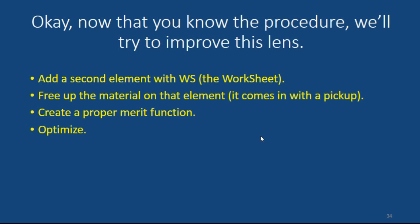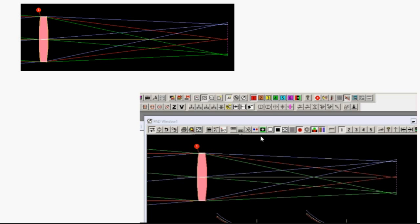Now you know the procedure, so let's try to improve this lens for real. We're going to add a second element with the worksheet. We're going to free up the material on that element, because it comes in with a pickup. We'll create a proper merit function, and then optimize the lens. Here's your lens, and there's only one element. We want to add another element to it.